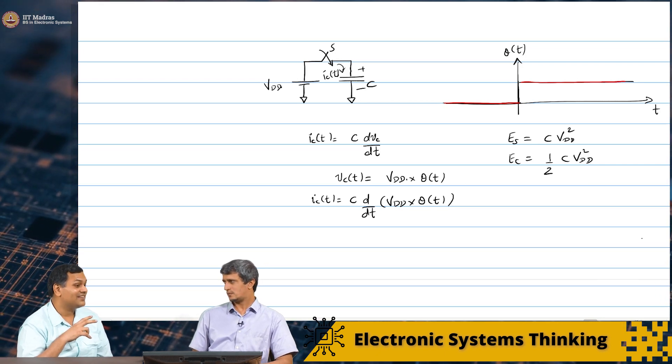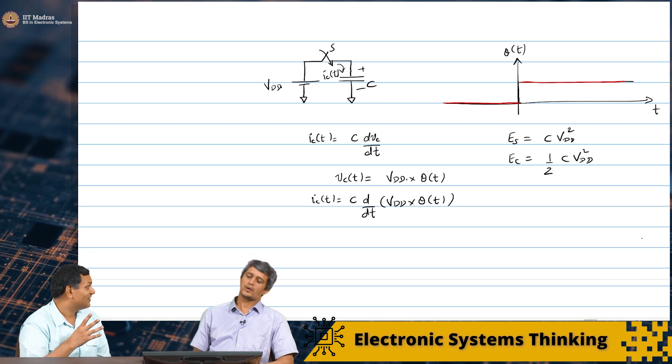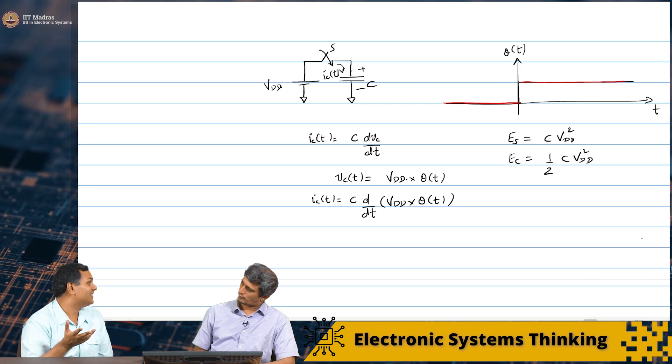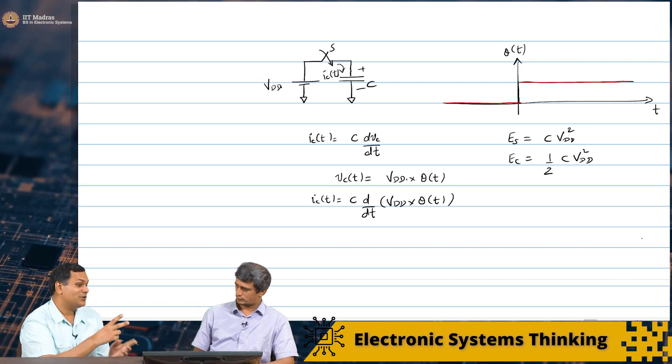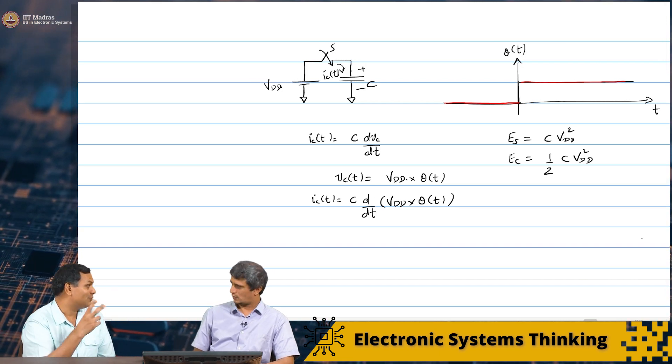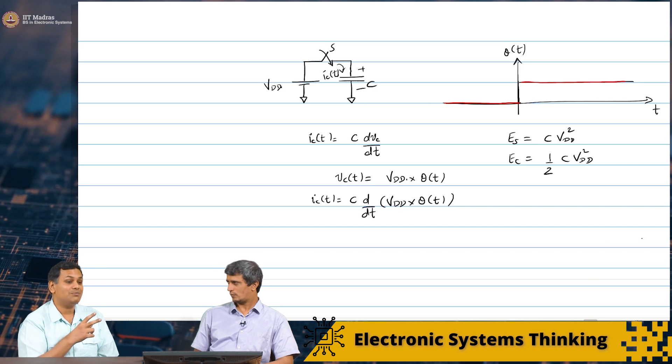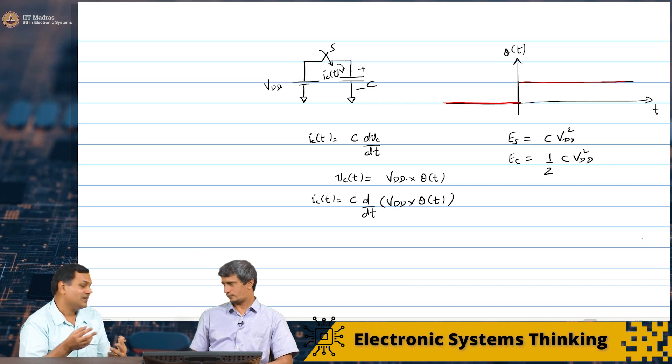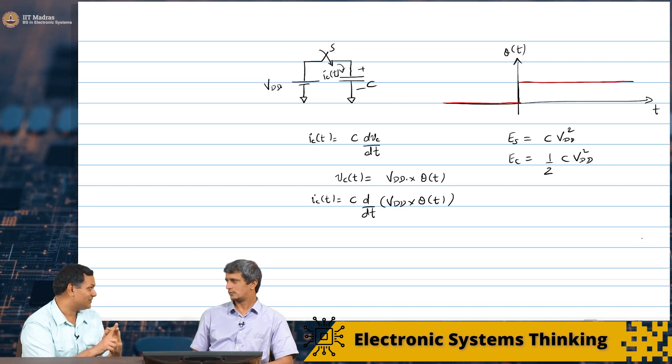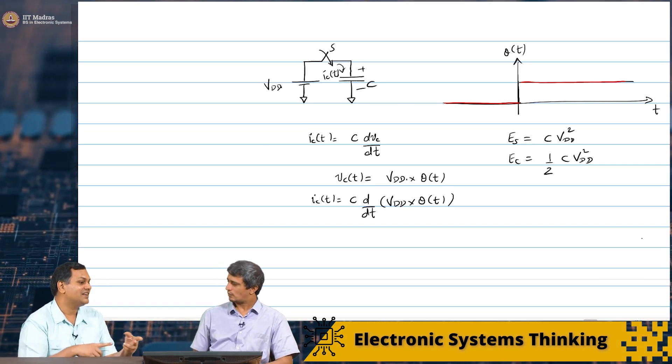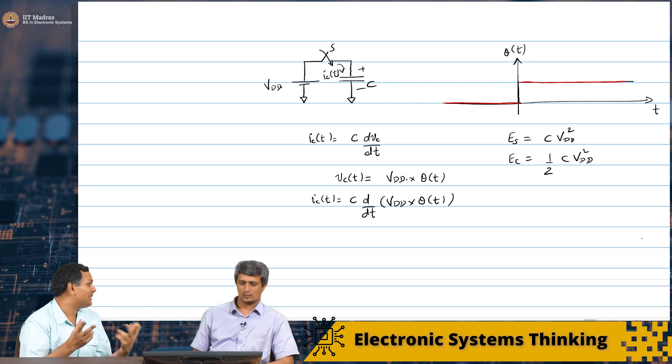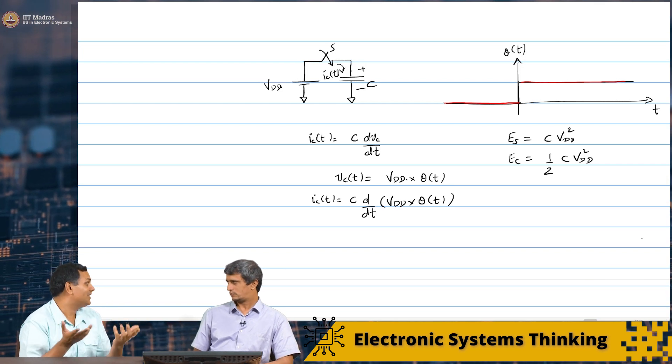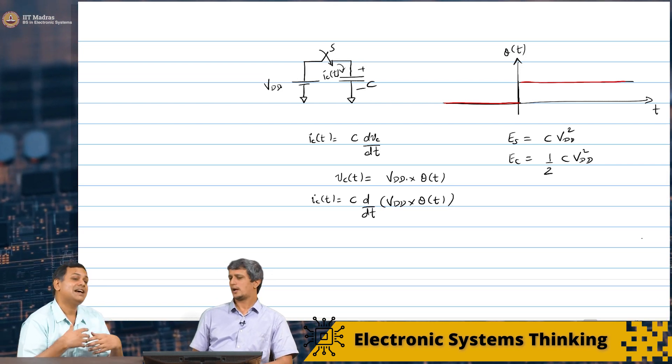Yes. And earlier we said that the energy dissipated, this half C Vdd squared, we showed in fact, was dissipated in the resistor. In the resistor. Right. But now theoretically if I make it that small, then does this still hold. Now, we have a problem. Right. Because we do not have a resistance to dissipate that energy. Correct. That energy. So, that energy must be going somewhere.